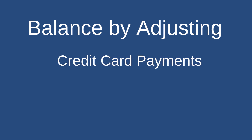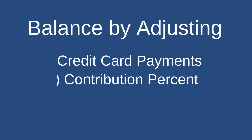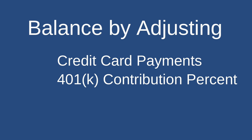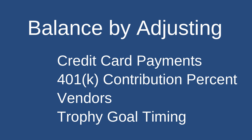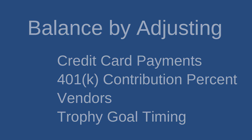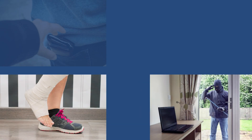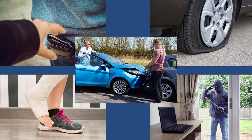These include: credit card payments — can you afford to pay off the entire balance right away, or will you need to make a partial payment? 401k contribution percent — using the payroll calculator, can you improve cash flow by adjusting the percentages on different paychecks? Vendors — can you improve cash flow by switching some vendor selections? Trophy goals — trophy closing dates vary, so are you earning any before you need to? Balancing can involve trial and error and weighing trade-offs. Don't forget to leave a little wiggle room in case something unexpected happens in the simulation.